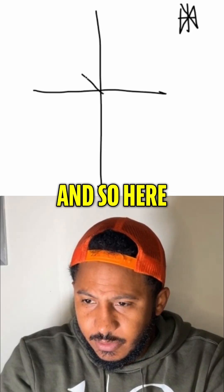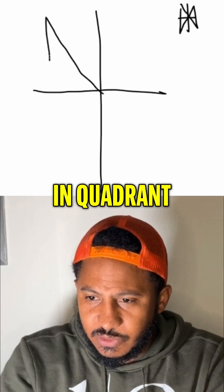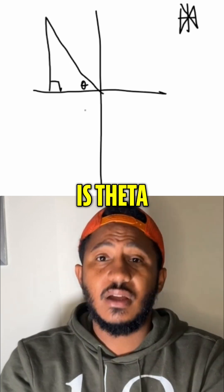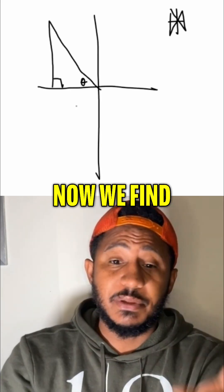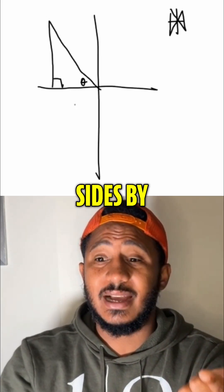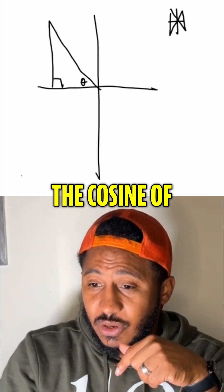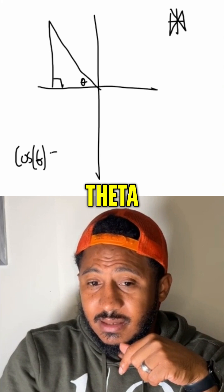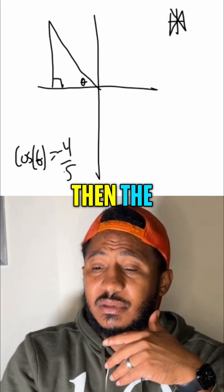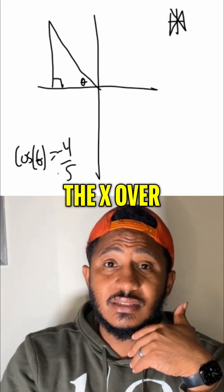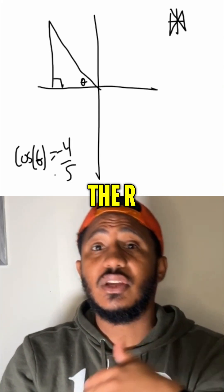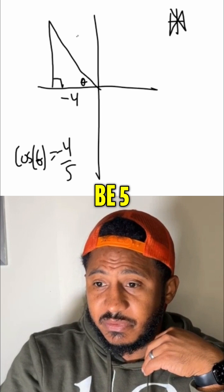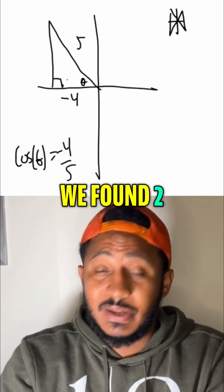So here, since it's in quadrant 2, we're looking at something like this, where there is theta. We find the sides given that the cosine of theta is negative 4 over 5, meaning the cosine is x over r. So x would have to be negative 4 and r would have to be 5. We drew our triangle.